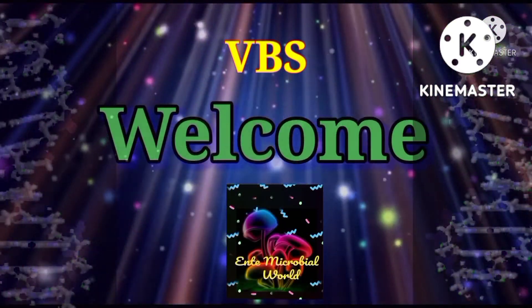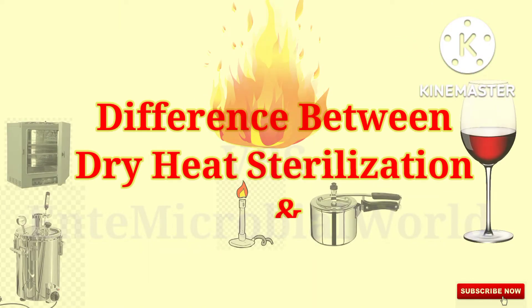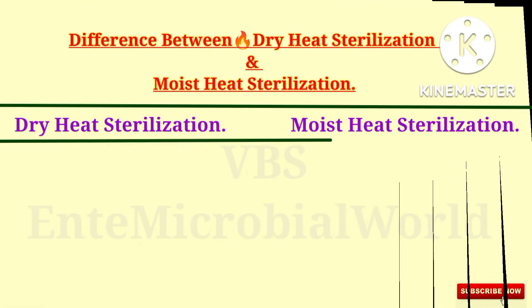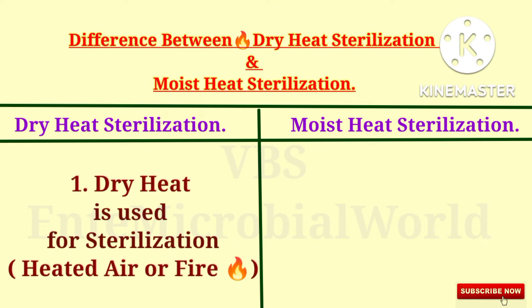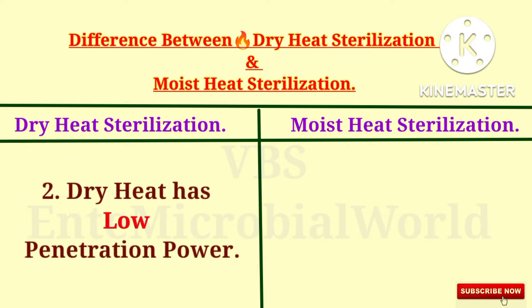Hi friends, welcome to my video. In this video we are going to see the difference between dry heat sterilization and moist heat sterilization. In dry heat sterilization, dry heat — that is heated air or fire — is used for sterilization. In moist heat sterilization, moist heat — that is hot water vapor — is used for sterilization.